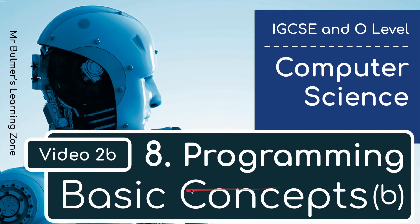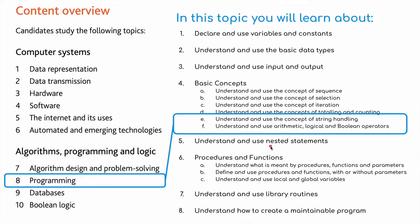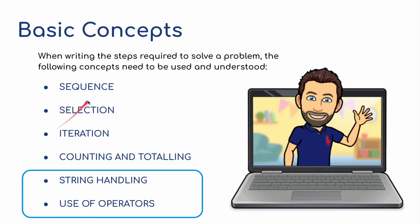Welcome back to the second part of basic concepts, looking at Topic 8: Programming for the IGCSE Computer Science course. We're going to be looking at string handling and logical, arithmetic, and boolean operators. We talked about sequence, selection, iteration, counting, and totalling in the previous video.